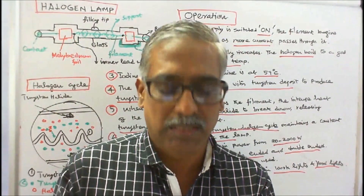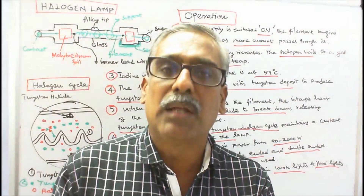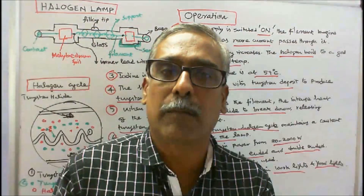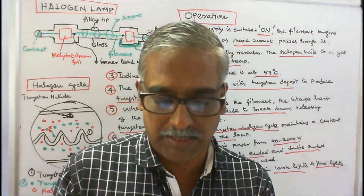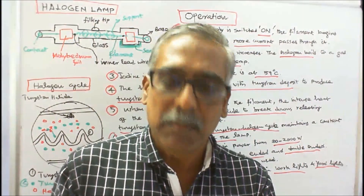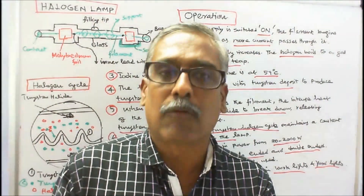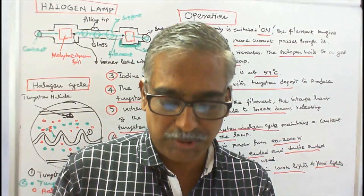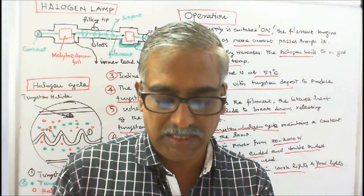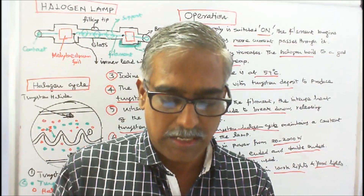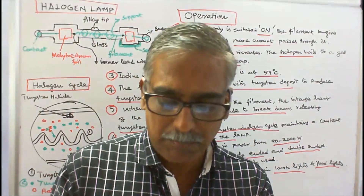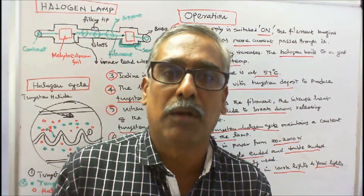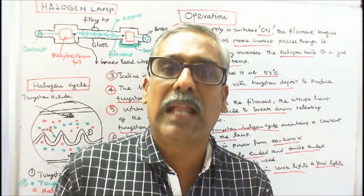Disadvantages of halogen lamps: (1) They pose a safety threat as heat generated can range from 250 to 900°F. (2) They are extremely hot and easily capable of causing severe burns if touched. (3) On explosion, the bulb is capable of blowing and sending hot glass shards. (4) The life of a halogen lamp is shortened by frequent on and off cycles.